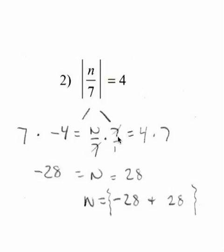The reason I did that is I wanted to clear the fraction out. When you multiply both sides by 7, you get 7n over 7 — the 7s reduce down. And 4 times 7 is 28. Since we also set it to negative 4, 7 times negative 4 is negative 28. So we've got two answers: n is equal to negative 28 and 28.